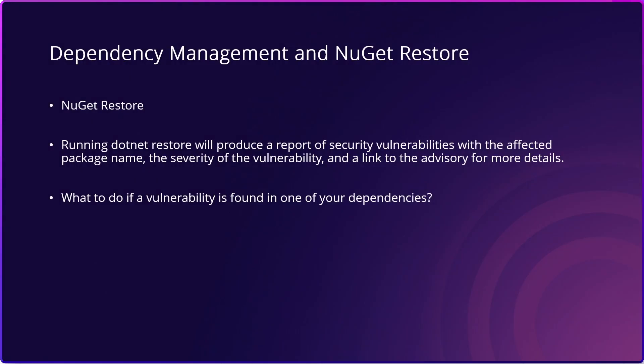Now let's talk about how you can actually monitor your dependencies in your projects to maintain security, and what to do if a package that you're using has a vulnerability. NuGet makes it really easy to find out about any security vulnerabilities that might be in your projects, and this is all thanks to the NuGet restore command. The restore command automatically runs when you do a common package operation such as loading a project for the first time, adding a new package, updating a package version, or removing a package from your project in your favorite IDE. You can also manually type dotnet restore into the terminal window at any time to run the restore command.